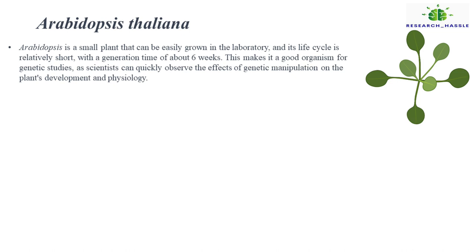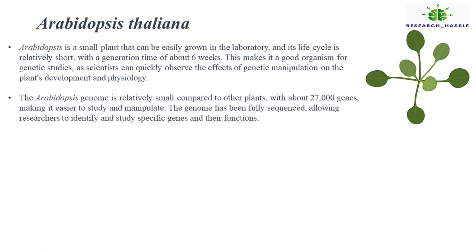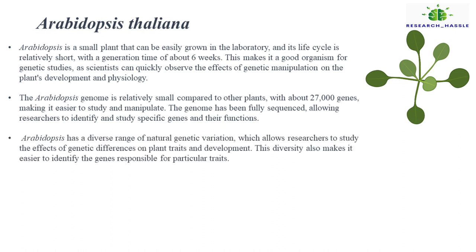Last is Arabidopsis. Arabidopsis is a small plant that can be easily grown in the laboratory, and its life cycle is relatively short, with a generation time of about six weeks. This makes it a good organism for genetic studies, as scientists can quickly observe the effects of genetic manipulation on the plant's development and physiology. The Arabidopsis genome is relatively small compared to other plants, with about 27,000 genes, making it easier to study and manipulate. The genome has been fully sequenced, allowing researchers to identify and study specific genes and their functions. Arabidopsis has a diverse range of natural genetic variation, which allows researchers to study the effects of genetic differences on plant traits and development. This diversity also makes it easier to identify the genes responsible for particular traits.